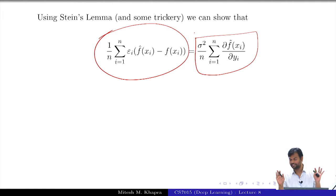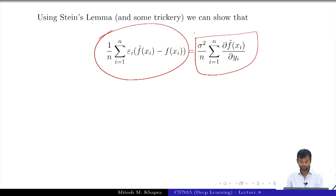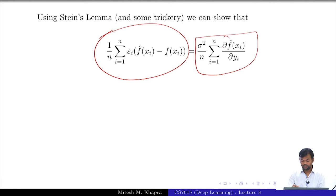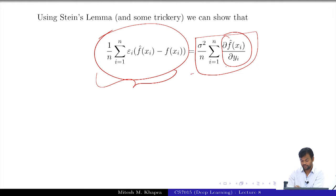Let us accept that Stein's Lemma is correct and it tells us that this is the case. Now we will work with this premise and see what it actually tells us — when will this quantity be high? This quantity is actually equal to the summation of this quantity.